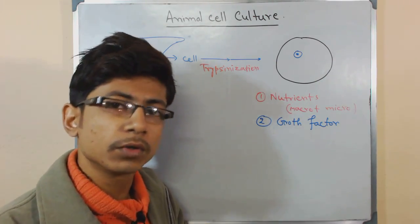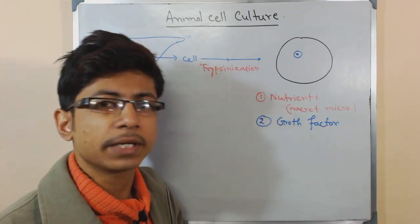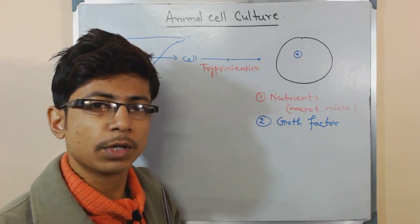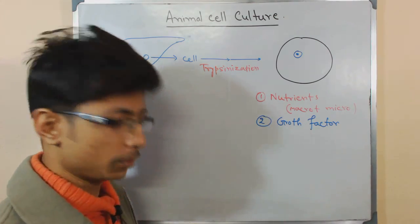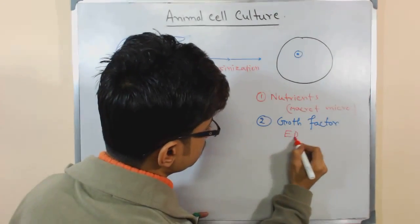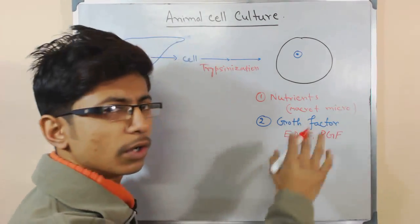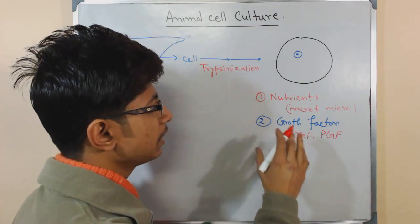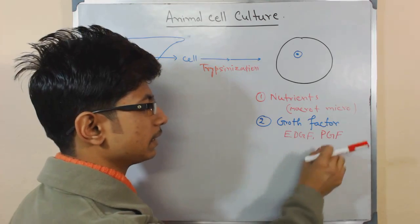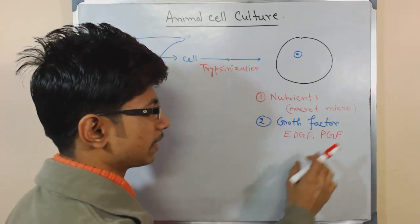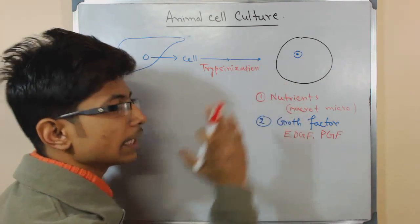If you want to know how growth factors control cell growth and division, you can look at my YouTube channel for videos on growth factor receptors and cell signaling. Examples of growth factors include epidermal growth factor (EGF) and platelet-derived growth factor (PDGF). These two things — nutrients and growth factors — are what the culture media must contain.